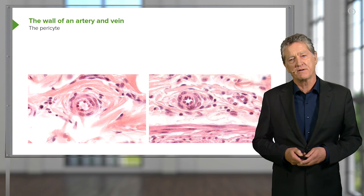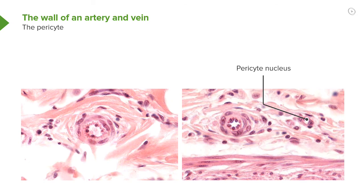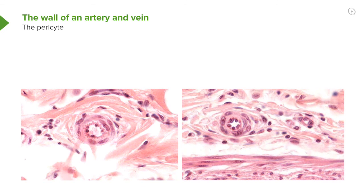But I want to mention the pericyte. On the right-hand side, you can see a little tiny vessel. This little tiny vessel is surrounded by an endothelium. The endothelium is the lining of the capillary. If I just take away the label, have a look at this tiny little vessel. Try and pick out a nucleus—it will be the endothelial cell nucleus. I know this is very hard.